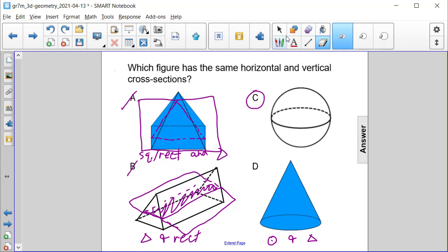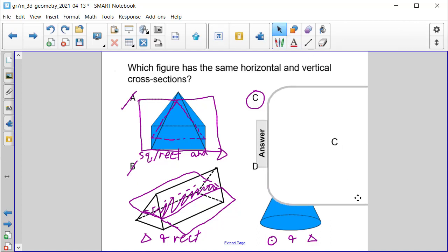So the correct answer here for the figure that has the same horizontal and vertical cross sections is answer choice C, the sphere.